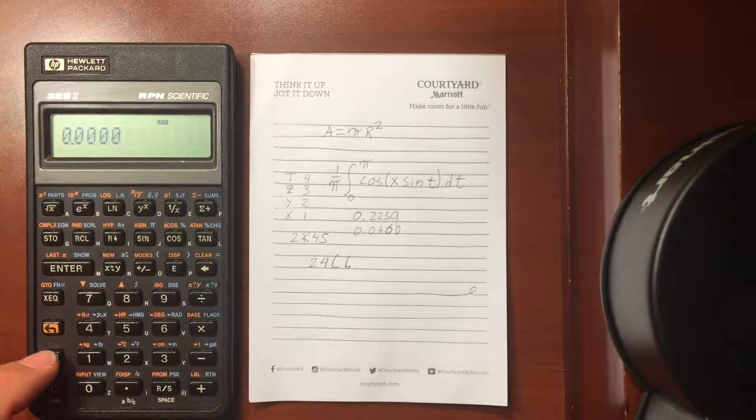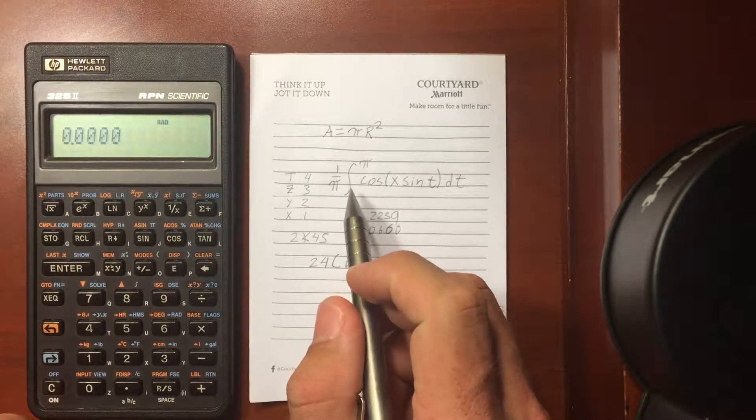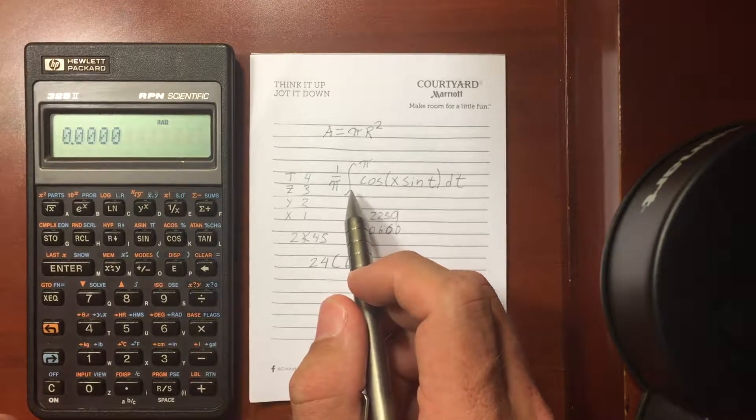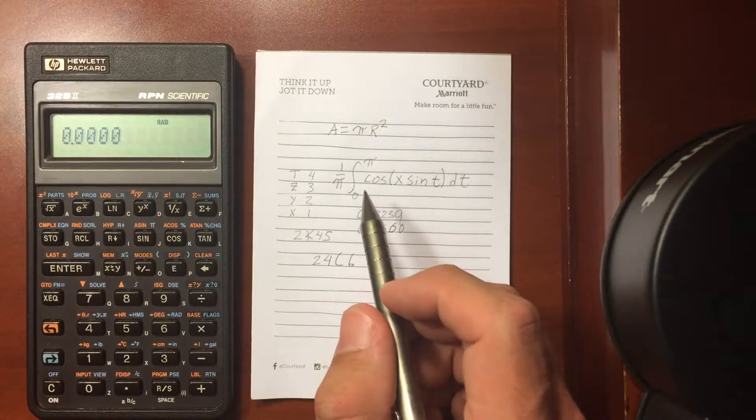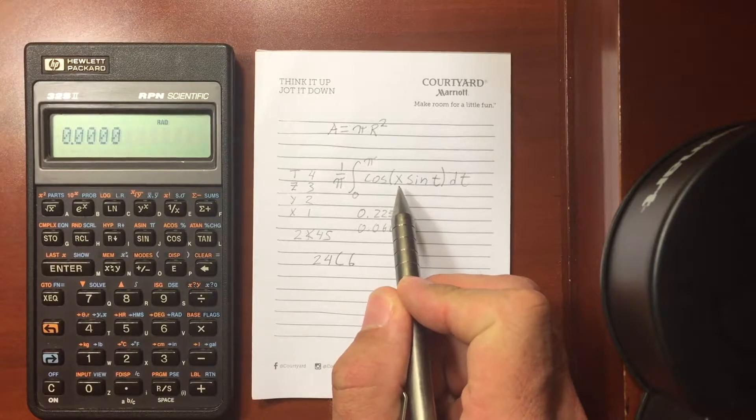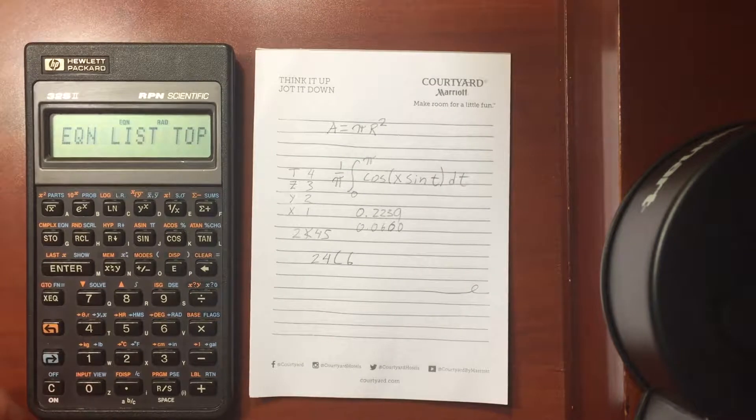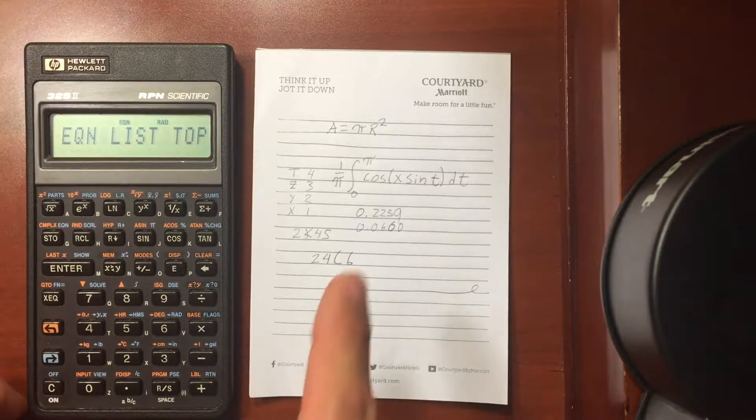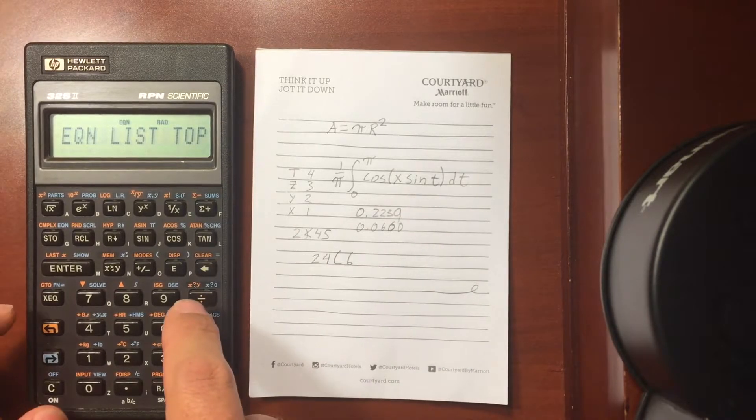In order to, right here I've got a Bessel function of the first kind, order zero, and I want to find values of two and three for x. So I'll go ahead and enter this first into the equation. I'm not going to have an equal sign here, I'm just going to enter the expression, and I'll start with what's inside the term here.